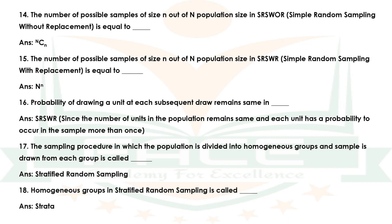Question 17 — The sampling procedure in which the population is divided into homogeneous groups and a sample is drawn from each group is called dash. Answer: Stratified random sampling. Question 18 — Homogeneous groups in stratified random sampling are called dash. Answer: Strata.